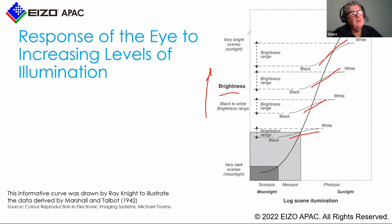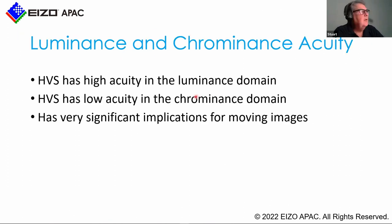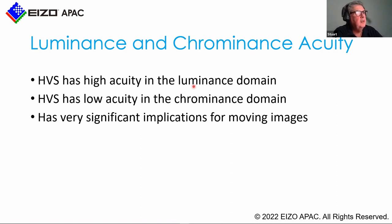The same applies to color with the Hunt Effect. As brightness increases, colors appear more colorful as well. Our human visual system has very high acuity in luminance — our ability to perceive resolution in the black and white grayscale world. But we have low acuity in chrominance — the color in the images. We exploit this to create 4:2:2 and 4:2:0 for Blu-rays, which allows us to see really good pictures while reducing the bit rate.